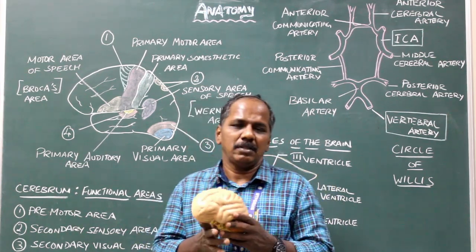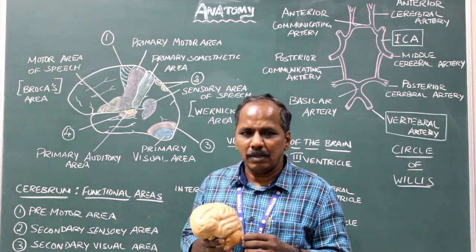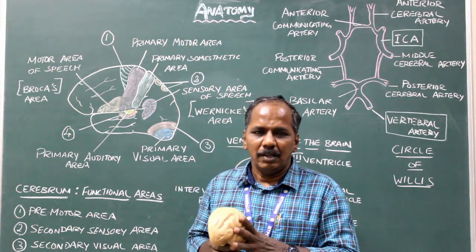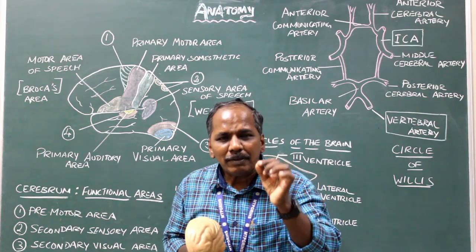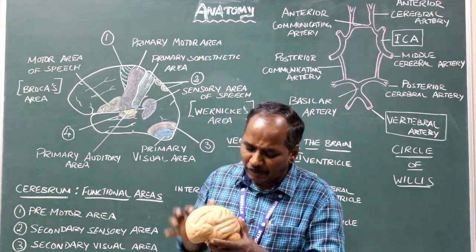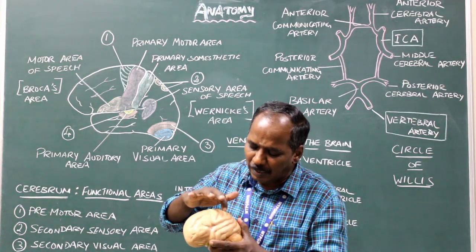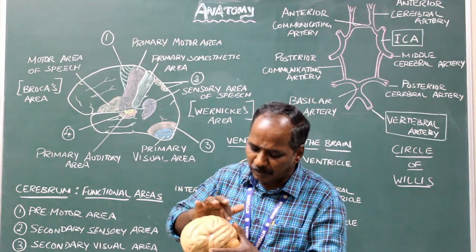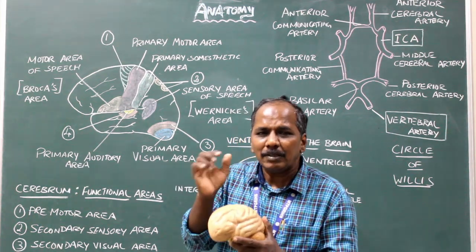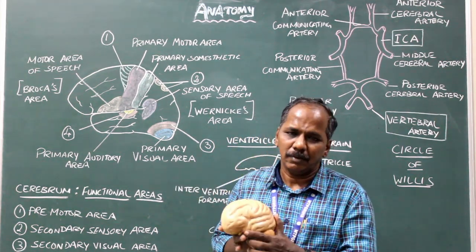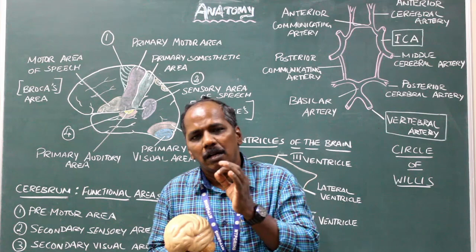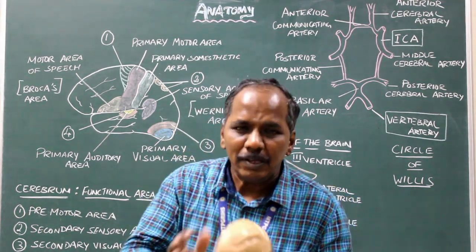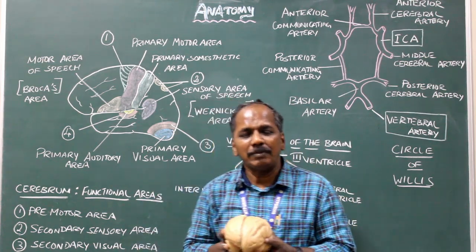An example of short association fibers is arcade fibers. Long association fibers connect widely separated gyri, from one gyrus to another gyrus across the same hemisphere. This concludes the association fibers.